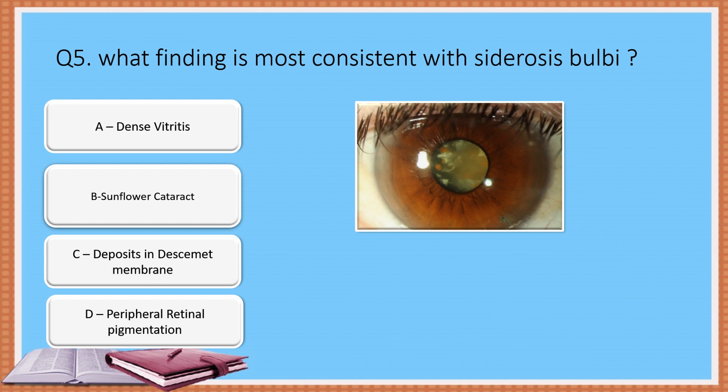Question 5: What finding is most consistent with siderosis bulbi? Option A: Dense vitritis. Option B: Sunflower cataract. Option C: Deposits in Descemet's membrane. Option D: Peripheral retinal pigmentation.